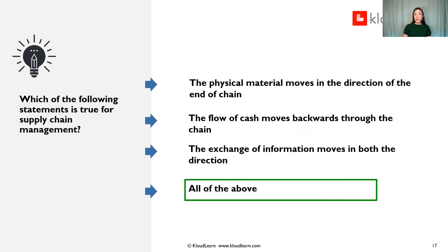Which of the following statements is true for supply chain management? A, the physical material moves in the direction of the end of chain; B, the flow of cash moves backwards through the chain; C, the exchange of information moves in both directions; or D, all of the above? All of these are true for supply chain management, so the answer is D, all of the above.